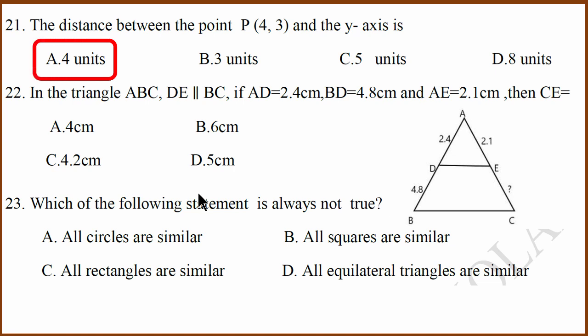22nd, similar triangle question. What they have said is DE is perpendicular to BC, which means basic proportionality says that AD divided by BD equals AE by EC. If you solve this, you will get 4.2. This is 2.4, double is 4.8. This is 2.1, double will be 4.2. Correct answer is C.